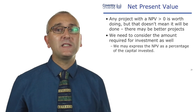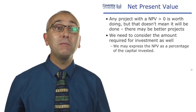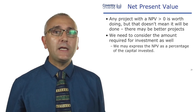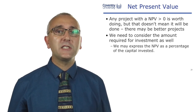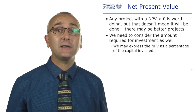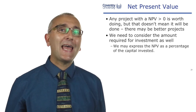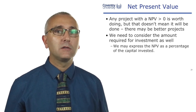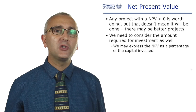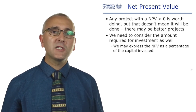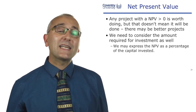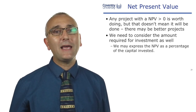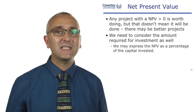Any project with a net present value greater than zero is worth doing — it's going to make you money. But that doesn't mean you will do it: Project B has an NPV greater than zero at £7,000, but Project A is much better. If Project A and B have different investment values, how do we compare them? We can express the net present value as a percentage of the capital invested to compare projects with different investment values.